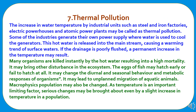The seventh type of pollution is thermal pollution. The increase in water temperature caused by industrial units such as steel and iron factories, electric powerhouses, and atomic power plants is called thermal pollution. Some industries use water to cool their generators, and this hot water is released into the main stream, causing a warming trend in surface waters. Many organisms are killed instantly by hot water. It may cause fish eggs to hatch early or fail to hatch, change diurnal and seasonal behavior and metabolic responses of organisms, lead to unplanned migration of aquatic animals, and cause serious population changes even with a slight increase in temperature.